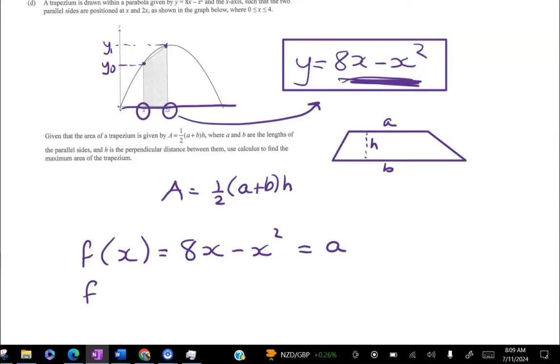And then f(2x) = 8 times 2x minus 2x all squared, which gives me 16x - 4x². And that's my expression for b.